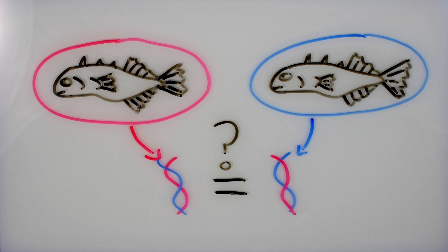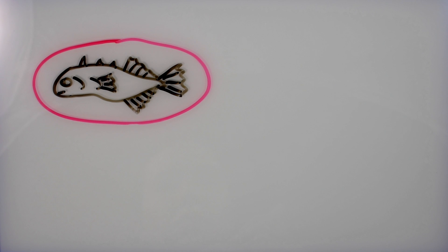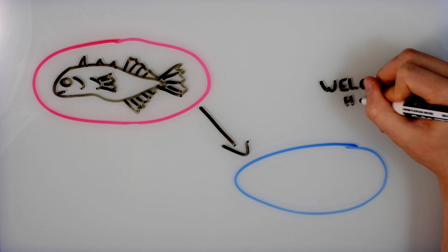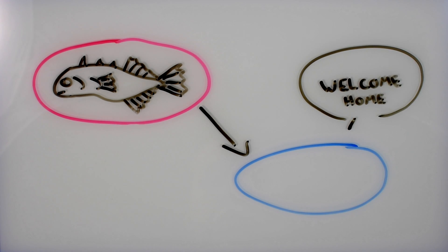But in addition to looking at fish that were already adapted to each of their environments, they also took some fish that were already living in a black water lake and moved them to an unoccupied clear water lake. They then checked on how they were adapting for the next 19 years.